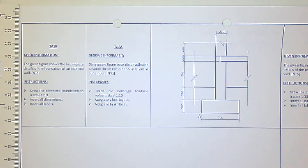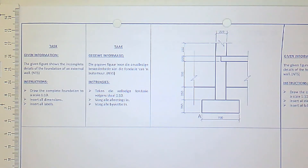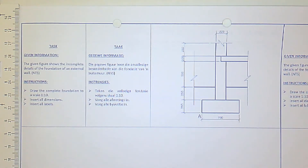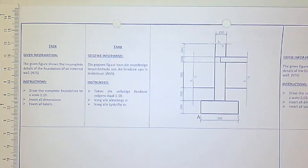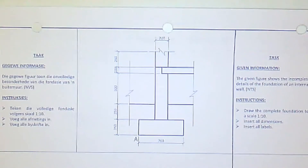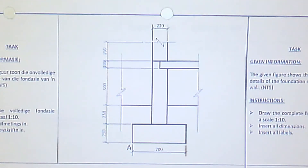Good morning. Today's exercise is page 10 - drawing a cross-section of a house foundation. This is effectively a front view cut through, so we can see both above and below the ground. We have to draw the complete foundation to a scale of 1 to 10, meaning every dimension is divided by 10 - so 700 becomes 70 and so on. We also need to add all the dimensions and labels shown on the diagram. I'll also talk about hatching, which isn't explicitly mentioned in the instructions.